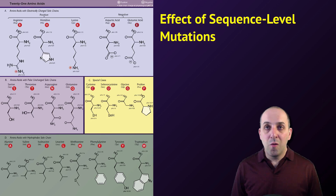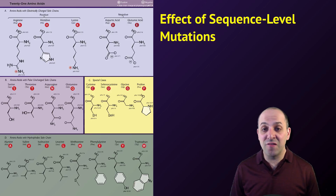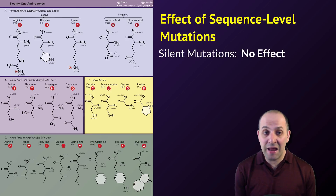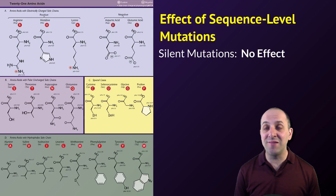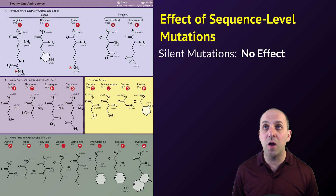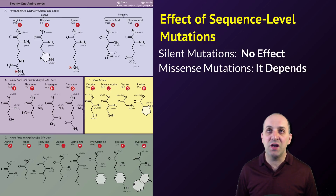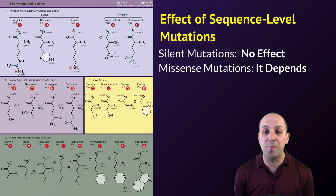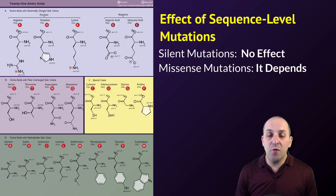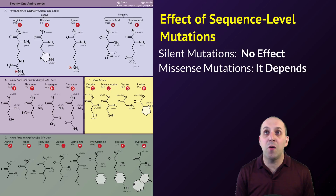So what kind of effect do sequence-level mutations have? It really depends on the specifics of the particular mutation. Mutations can be silent — they can have no effect. The mutation could occur in a region of the genome that doesn't code for a gene, or it could cause a codon to be turned into a different codon for the same amino acid, in which case it would still be a silent mutation. If a mutation occurs within a gene and changes a codon for one amino acid to a codon for a different amino acid, that's referred to as a missense mutation. Generally speaking, if the amino acid chemistry is similar, it's not really going to have a big effect.